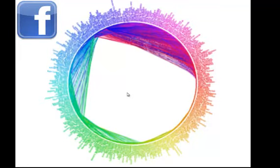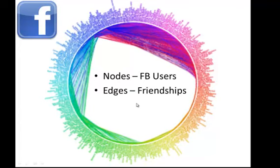So this is Facebook's friend wheel. Here the nodes are Facebook users, and the edges around the circle are the friendships, showing which of my friends are friends with each other.